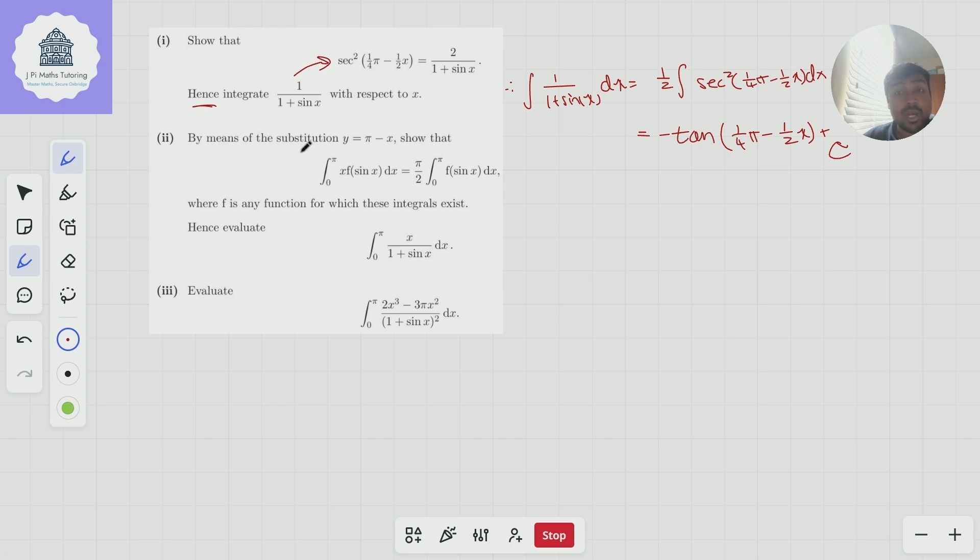Part two, by means of the substitution y equals pi minus x, show that this is true. Again, I won't answer this part as well. This bit's very nice if you've not seen this idea before. It's using something which I believe is sometimes called the king's rule. It's a very nice trick. So if you've not seen this before, do go through the steps to try and prove this.